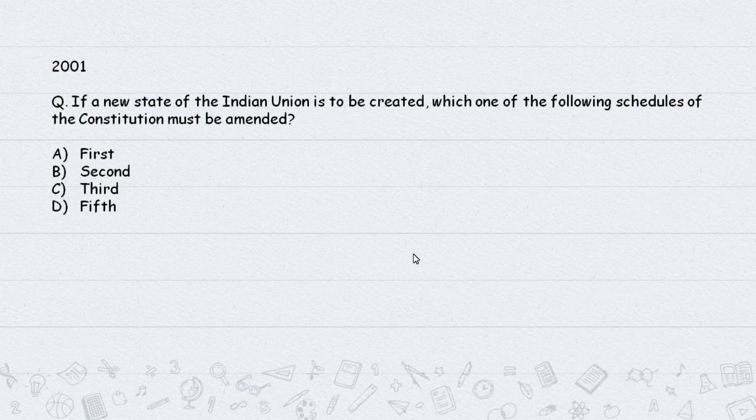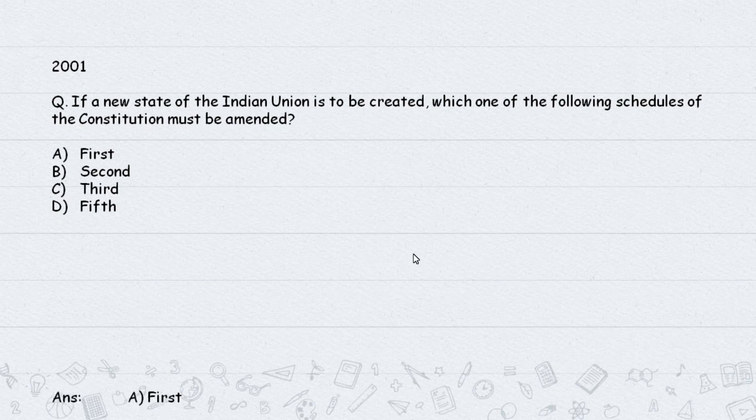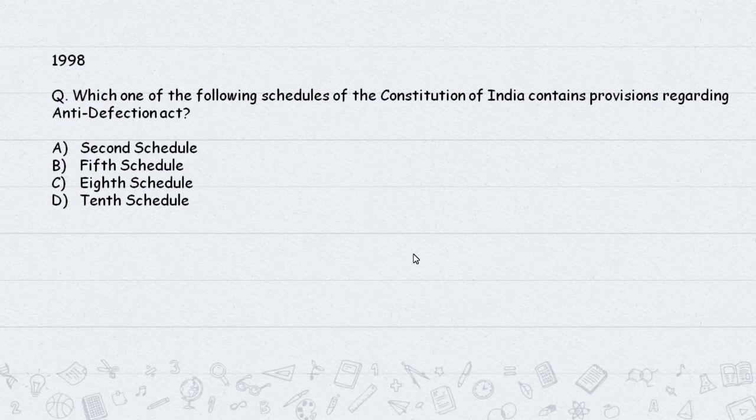When a new territory or Union Territory is added, the First Schedule must be amended. Second Schedule covers emoluments; Third covers affirmations; Fourth covers scheduled areas (EARS). Therefore the answer is the First Schedule - First Snake (Schedule).